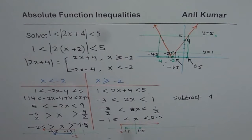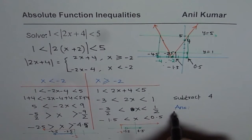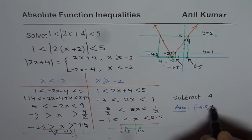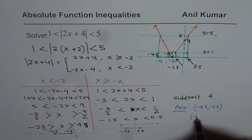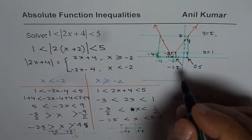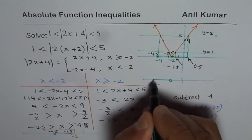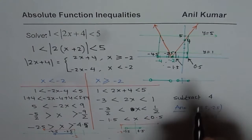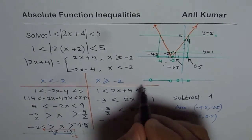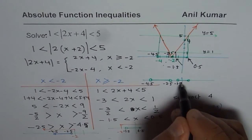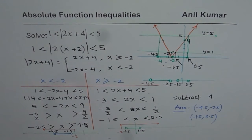Combining these two intervals, our answer is: x is between minus 4.5 and minus 2.5, or between minus 1.5 and 0.5. On the number line, these four key values are minus 4.5, minus 2.5, minus 1.5, and 0.5 — forming two separate solution intervals.